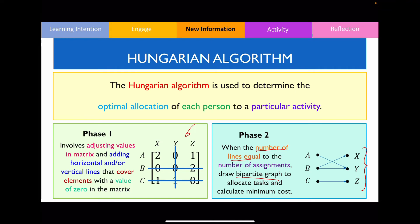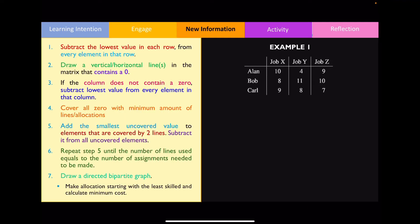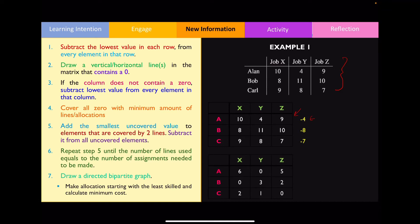In example one, we have three workers and three tasks. Each worker can perform each task, and the values show the times taken to complete each task. I'll represent this table as a matrix, abbreviating the names as A, B, and C. Step one: subtract the lowest value in each row from every element in that row. The smallest numbers in each row are four, eight, and seven respectively. Creating a new table by subtracting each row by those values gives us the updated matrix.